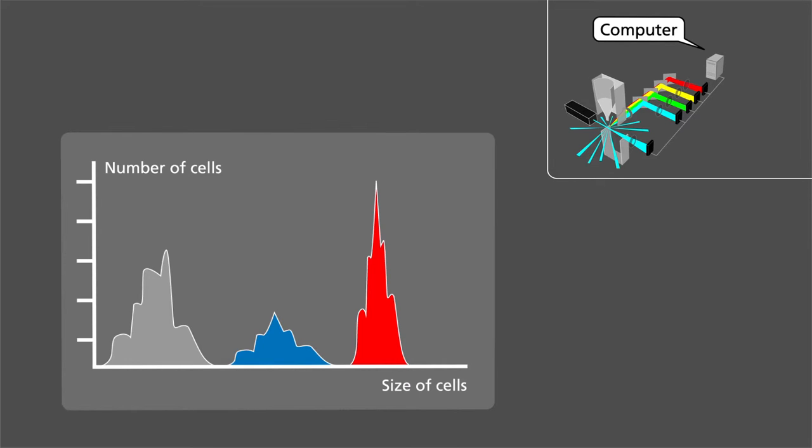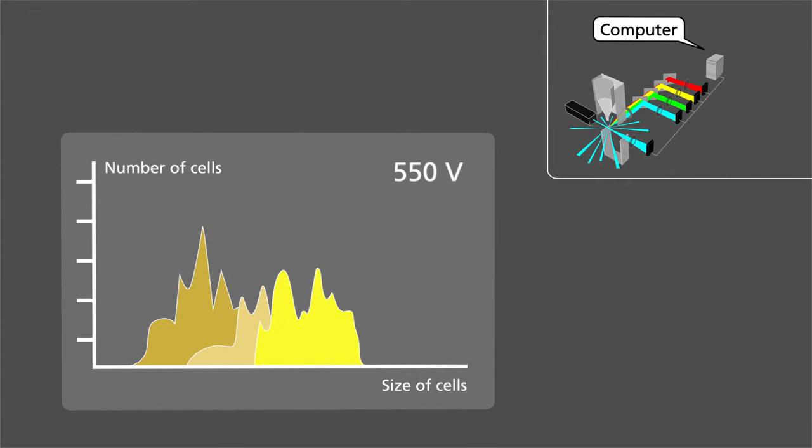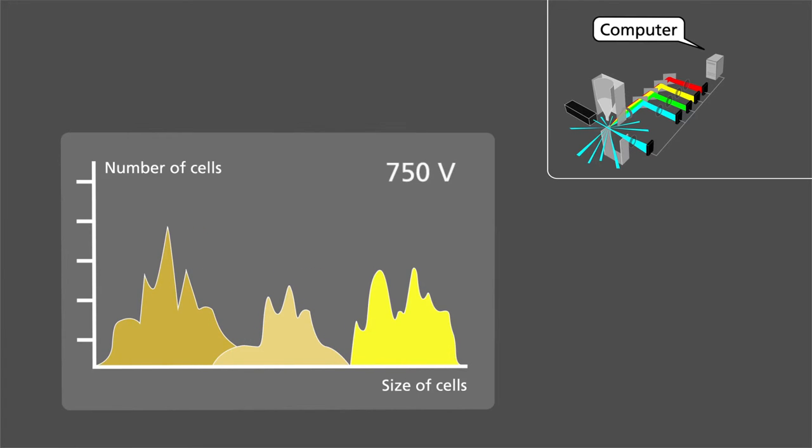The height of the plot is the number of cells of each type. The diode sensitivity or voltage can be adjusted to better separate the different types of cells, so the cytometer can provide an accurate counting.